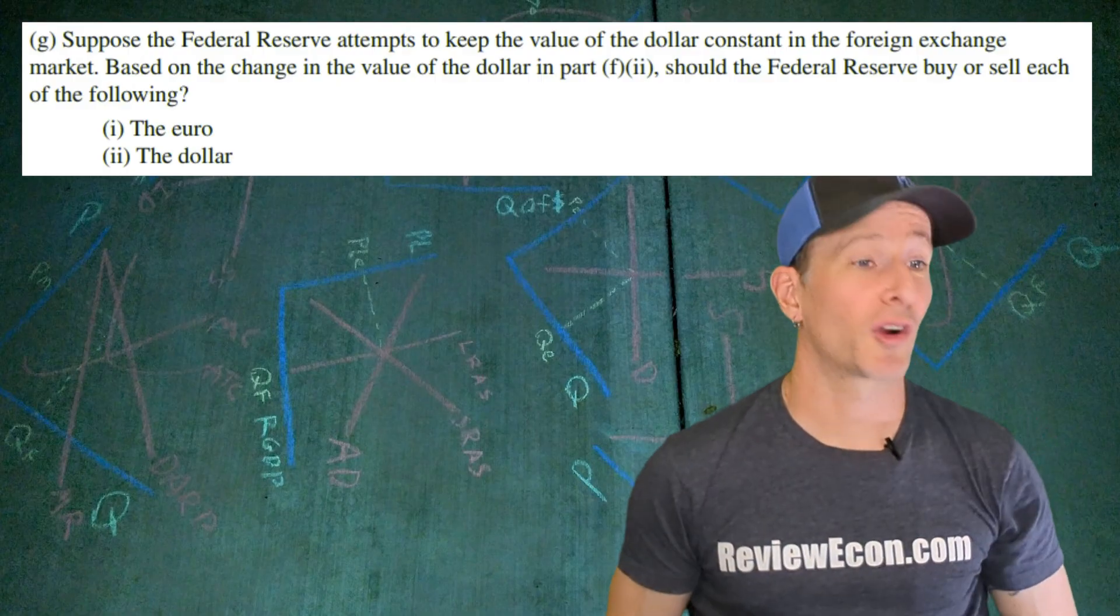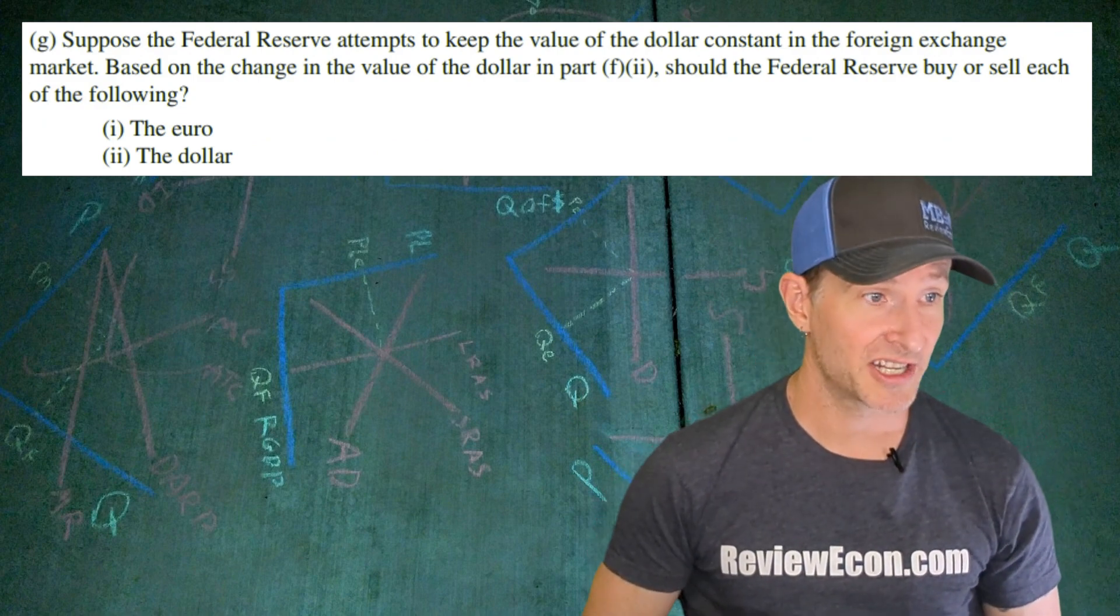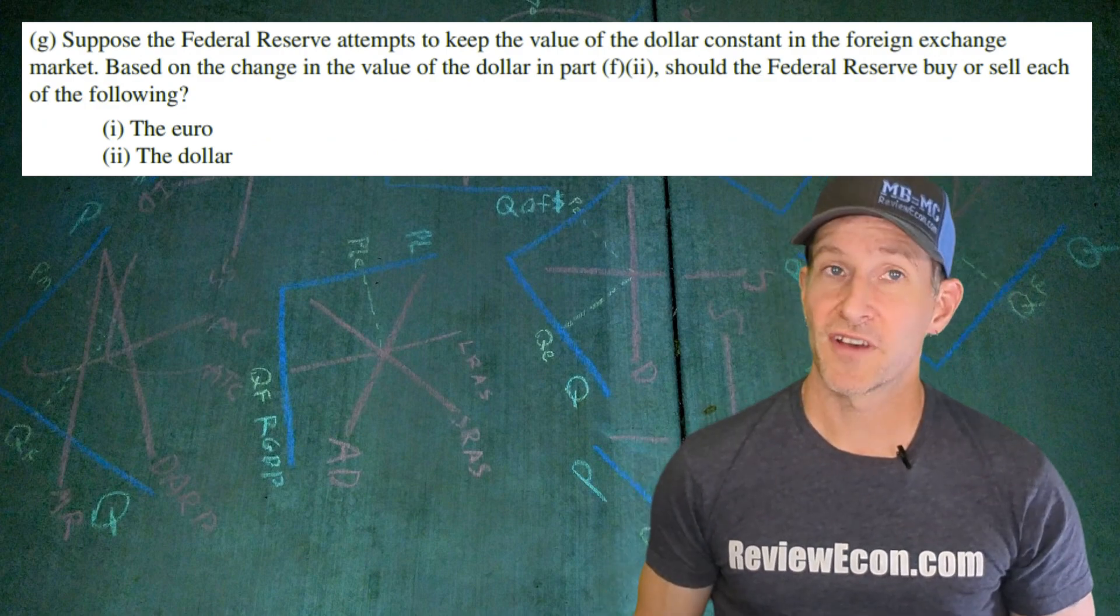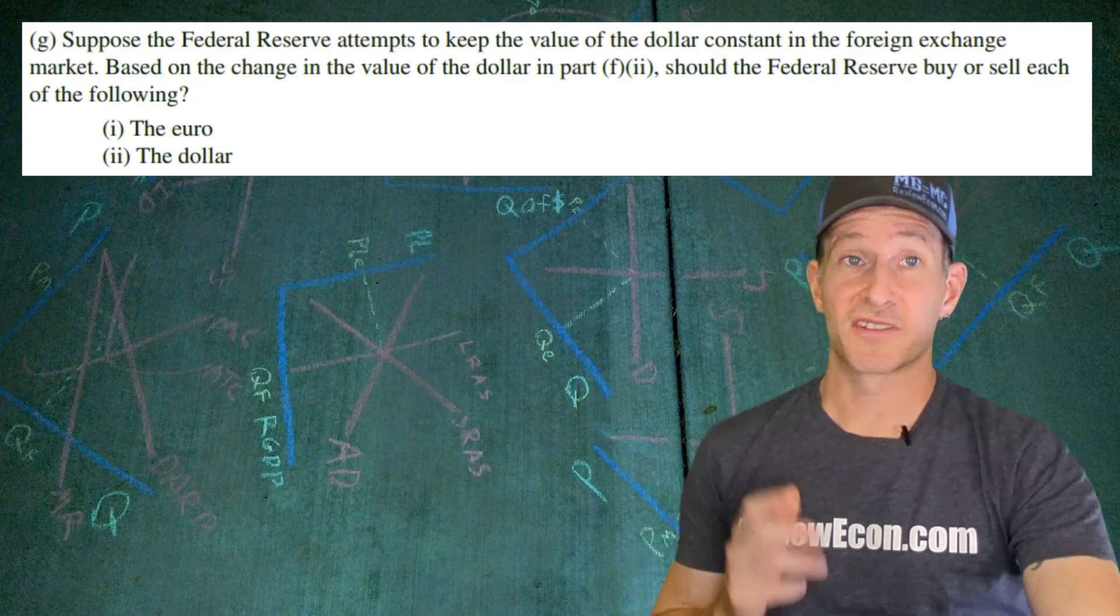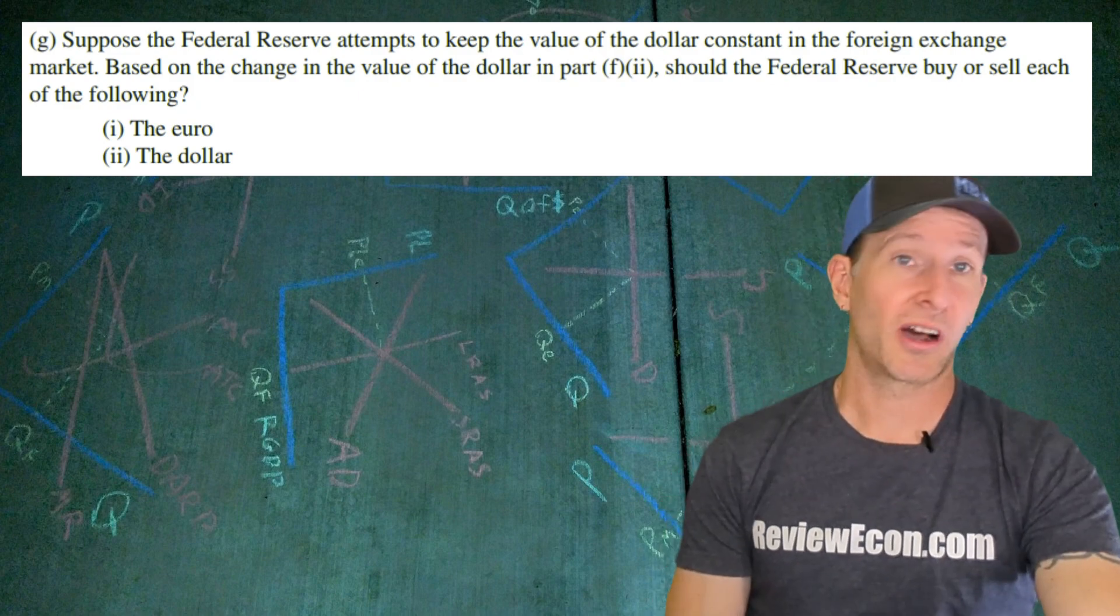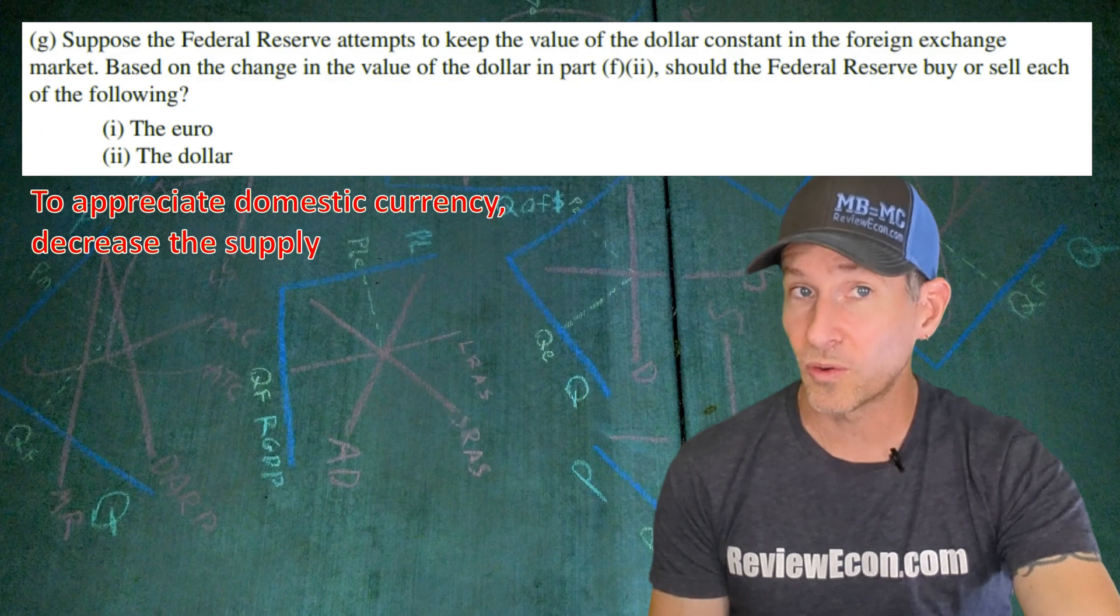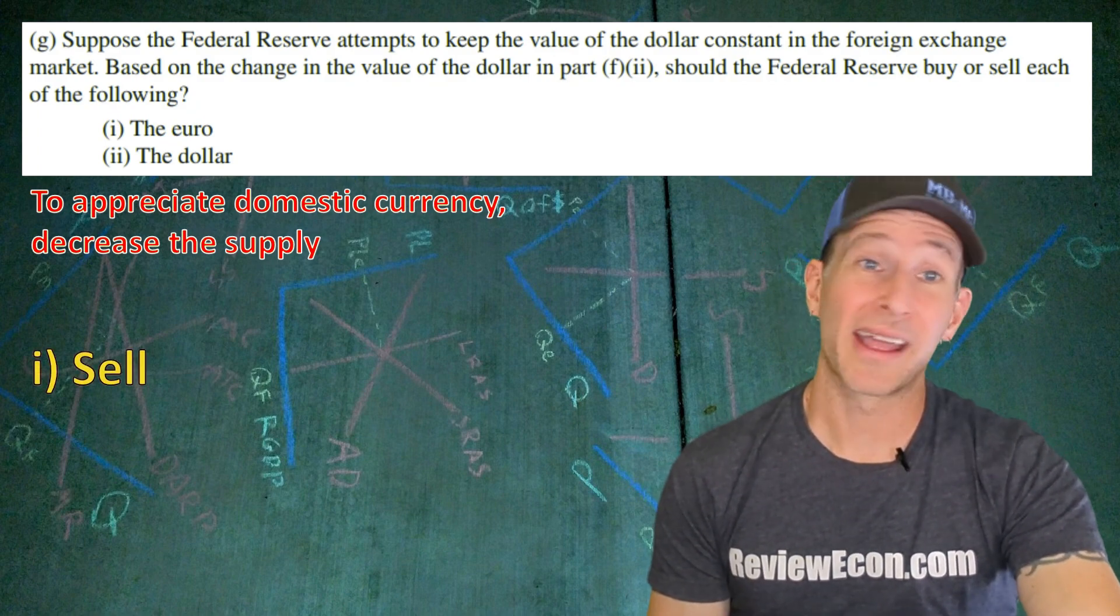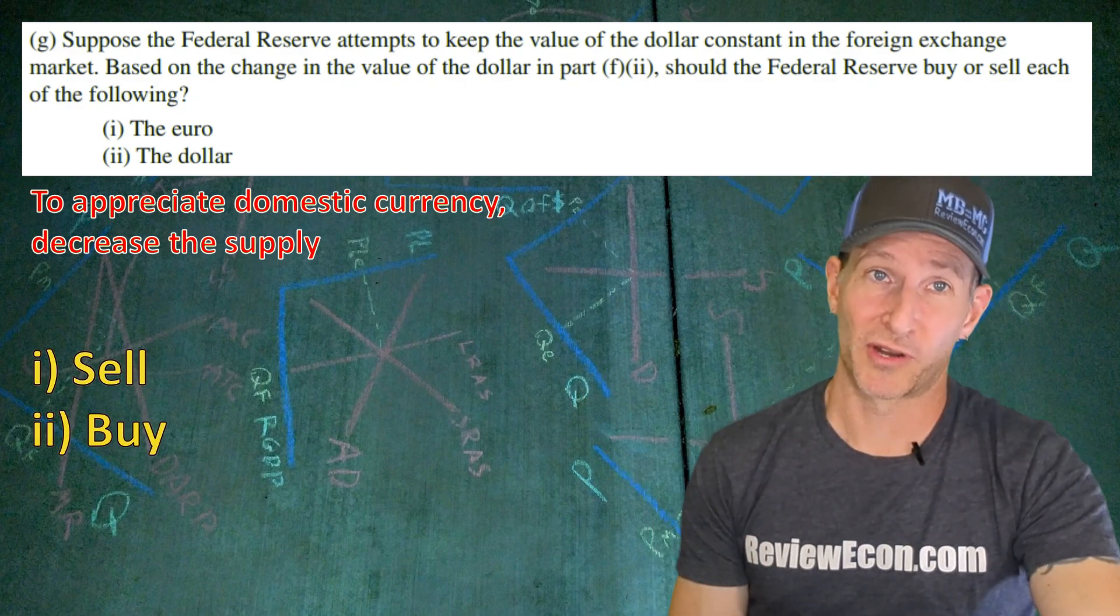For part G we have some currency manipulation going on by the federal reserve. They're going to attempt to keep the value of the dollar constant in the foreign exchange market despite the change in the inflation rate. Based on what we just saw should the federal reserve buy or sell both the euro and the dollar. The federal reserve is trying to reverse the depreciation which means they're trying to get the currency to appreciate. In order to cause the dollar to appreciate the federal reserve will need to decrease the supply of dollars or increase the demand. So they will sell the euro while they at the same time buy the dollar. And there you have it, those are the answers for the 2022 set two question number one.